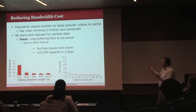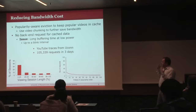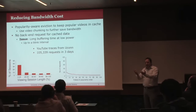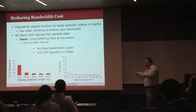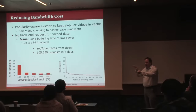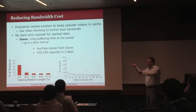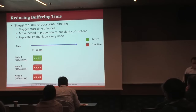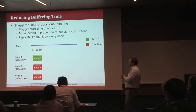One of the issues is that you have long buffering times at low power, because when the power is low, the blinking intervals bring different components on at different intervals. If a piece of content is on a server that's not currently up, you have to wait. What we came up with is an approach we call staggered load proportional blinking.